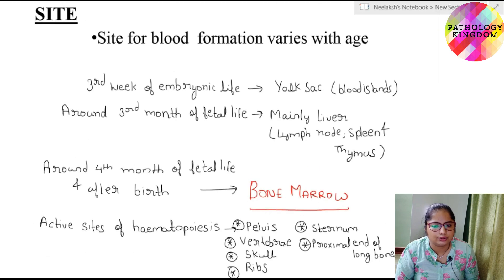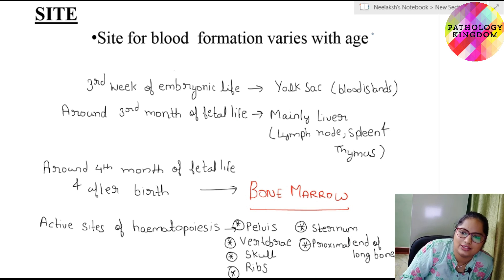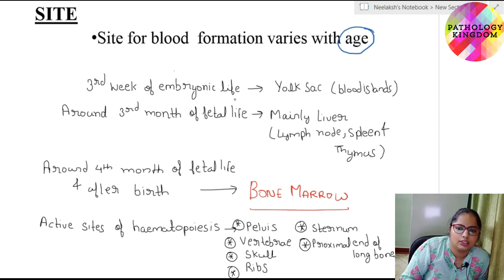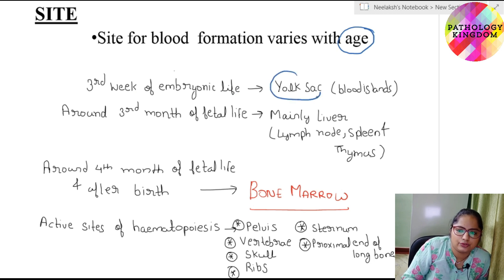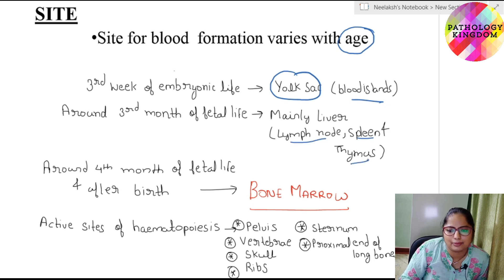The site for blood formation varies with age. At the third week of embryonic life, hematopoiesis starts in the yolk sac in the form of blood islands. Then around the third month of fetal life, the liver is mainly involved in hematopoiesis. Other organs involved are lymph nodes, spleen, and thymus, but the liver is the main site.